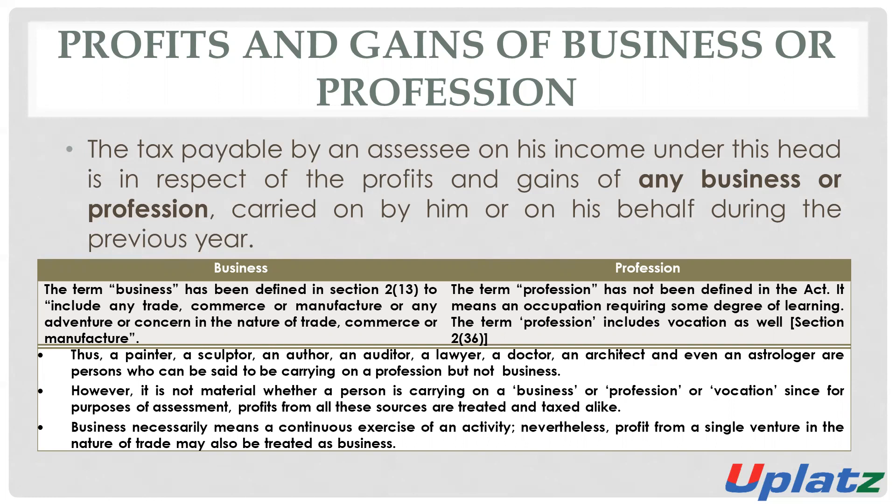A professional degree is required — just like a doctor. The doctor is a professional because he has the degree of MBBS or MD. So he will be considered as a professional. A Chartered Accountant also has the degree of CA, CS, or CWA — these all are considered as profession. Profession means an occupation requiring a degree of learning. An advocate — these all are professionals on the basis of their degree.